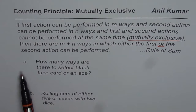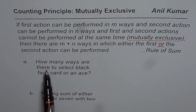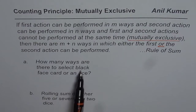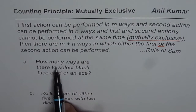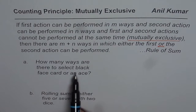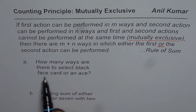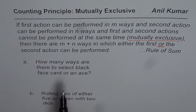The first example is: how many ways are there to select a black face card or an ace? The second example is: rolling a sum of either five or seven with two dice.